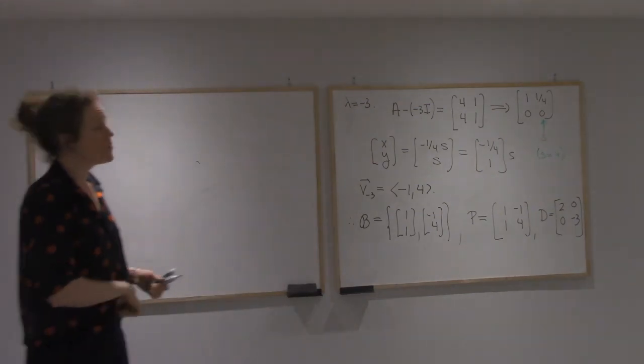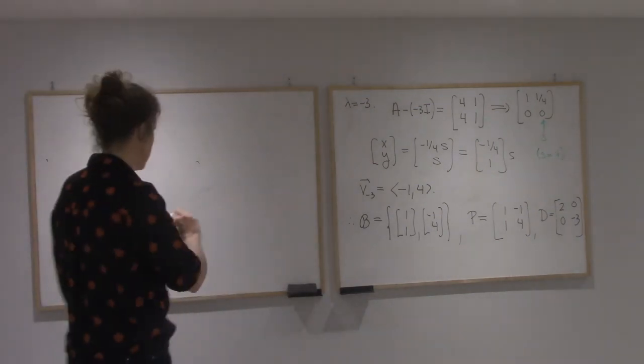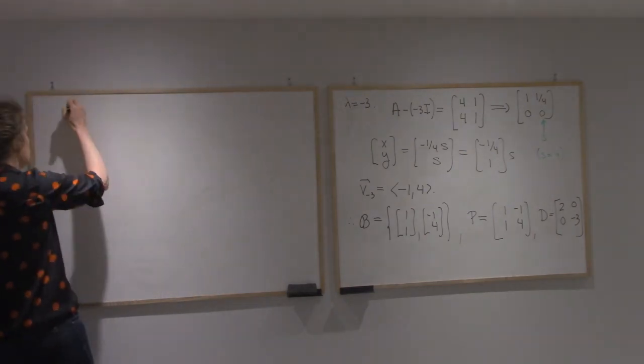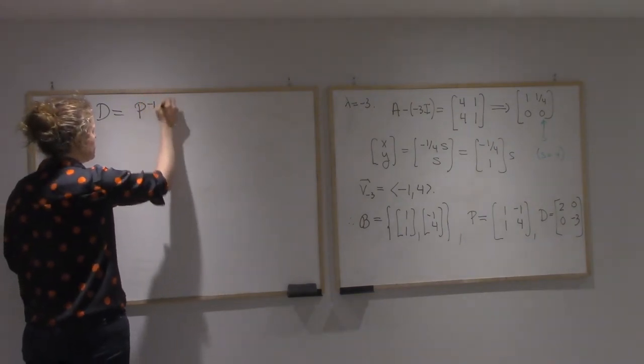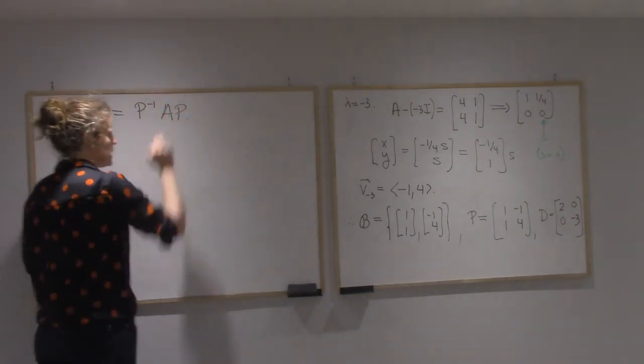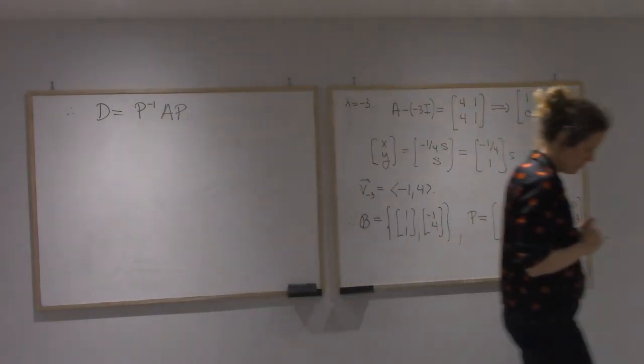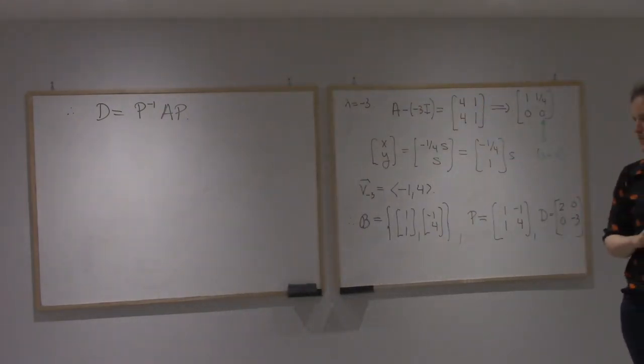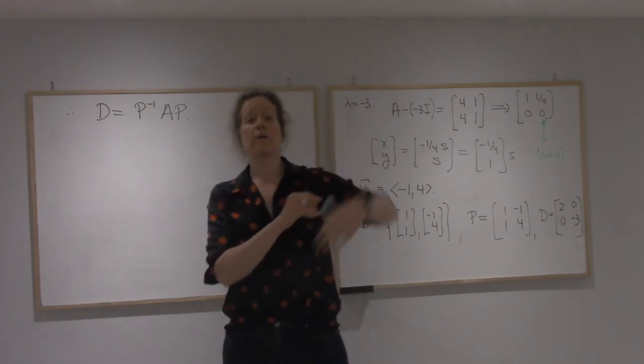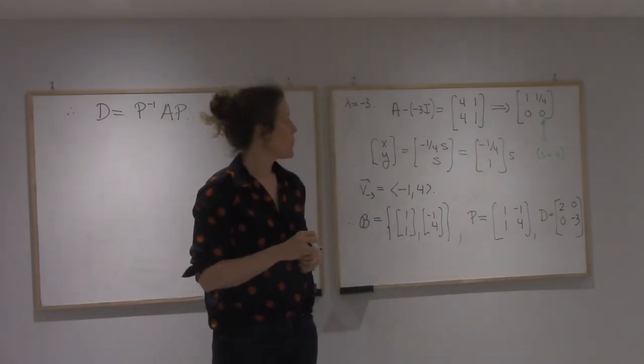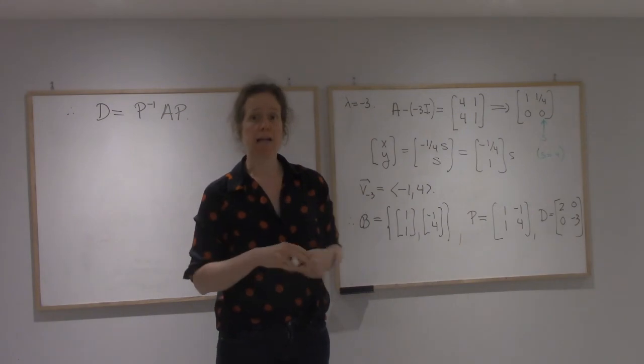Alright, and it should be fresh in your mind, but maybe you don't remember this. We now know that D, this diagonal matrix, is P inverse times A times P. Alright, so that entire problem could have been in section 9 about diagonalizing matrices. The next part will bring back differential equations.